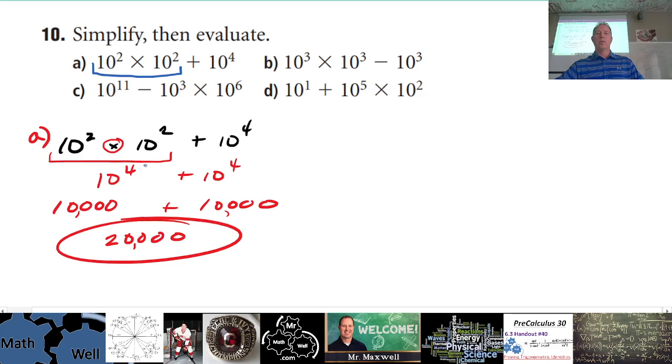So for part A, we would use our new little rule to find out what 10² × 10² is, but then when you add, you just have to add those numbers up. Right?